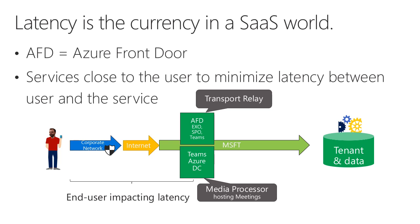What we can do is bring those endpoints closer to the user within our network so that the latency between the user and the service is reduced while the tenant's data is still in its home location. This concept allows us to reduce the latency and have a great impact. Now it's important to understand what you can do to use these investments we made to make sure that you get the most out of it.